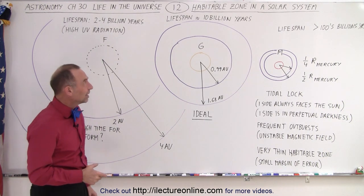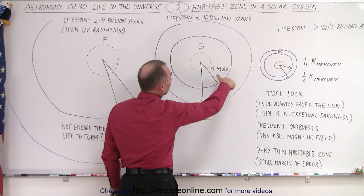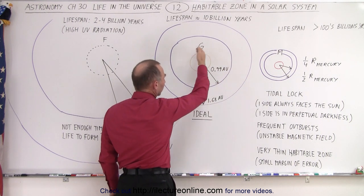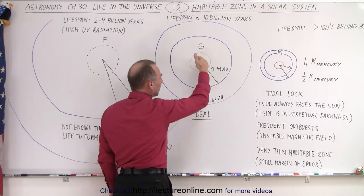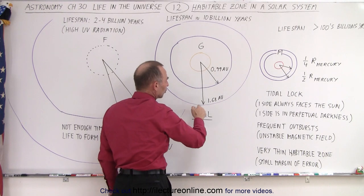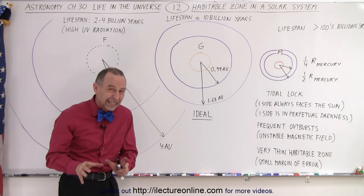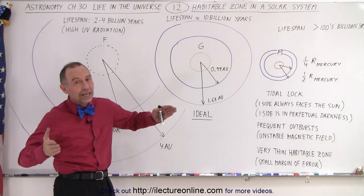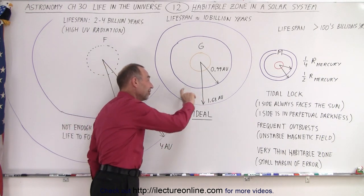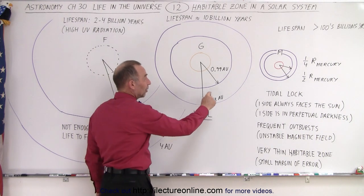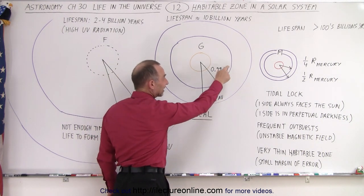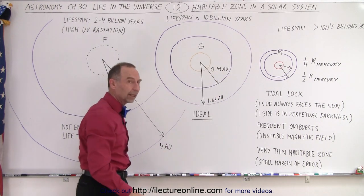So you can see that the habitable zone for a star like the sun would be about from about one astronomical unit to about 1.68 astronomical units. I'm not quite sure how they calculated that, but they do admit that the range could be greater because those are really very confined areas, and notice our Earth would be just inside the habitable zone according to this model that they came up with.